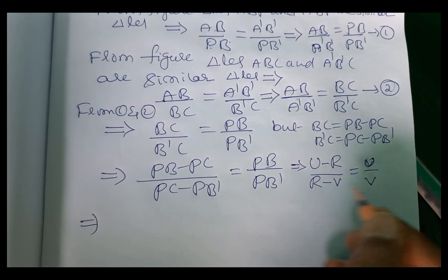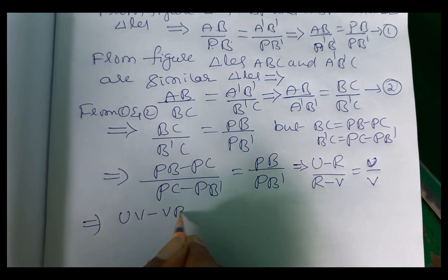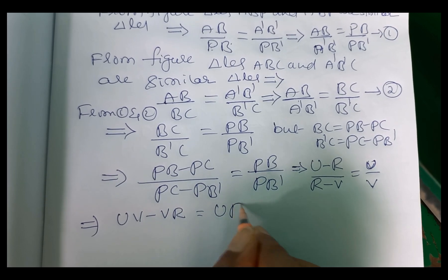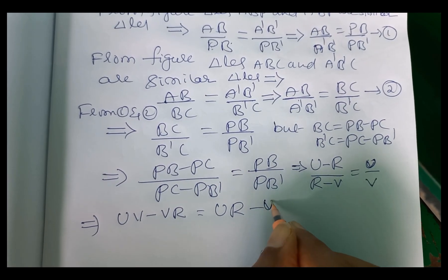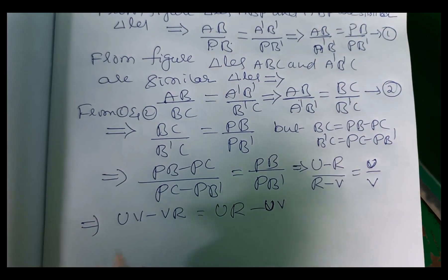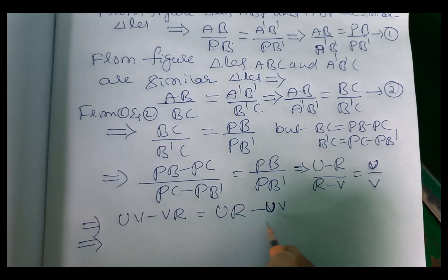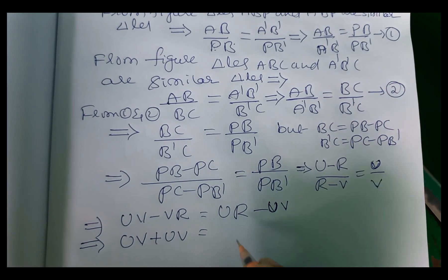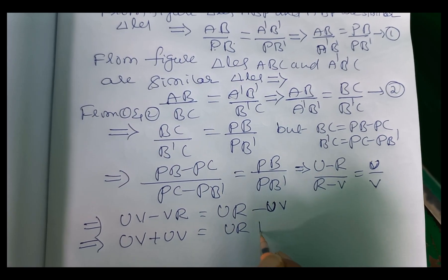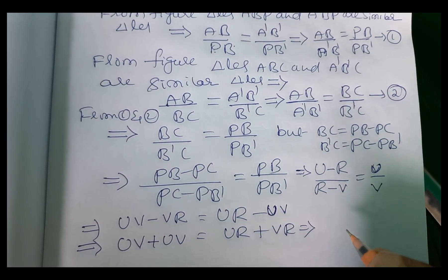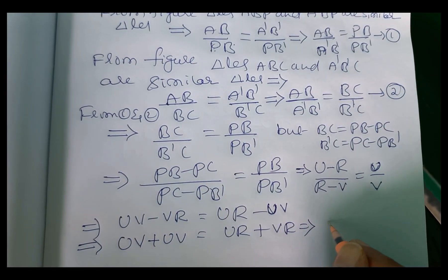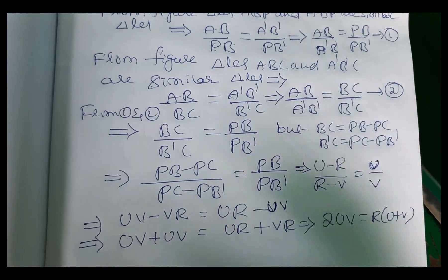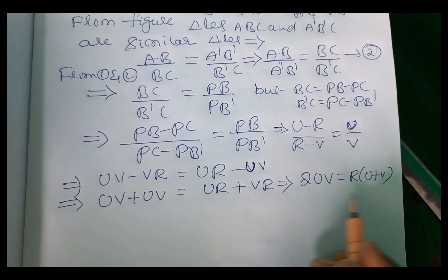So cross multiplication. U minus R into V, that is UV minus VR equal to cross multiplication, so UR minus UV. UR minus UV. So this implies UV minus UV plus UV equal to, UR plus VR. This implies UV plus UV, 2UV equal to R into U plus V, R is common. So now divide this by UVR.